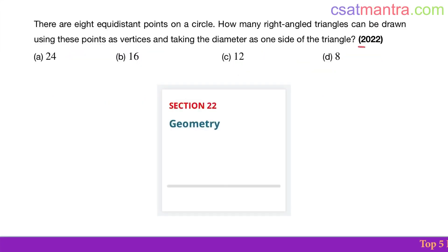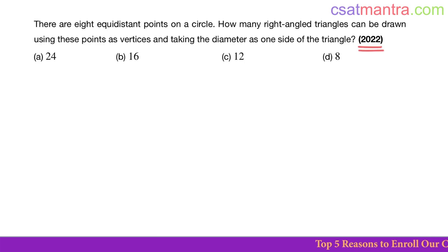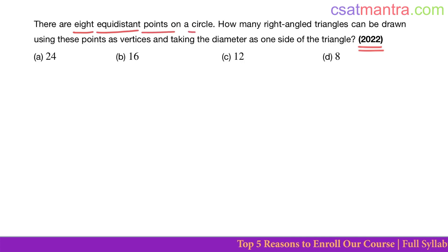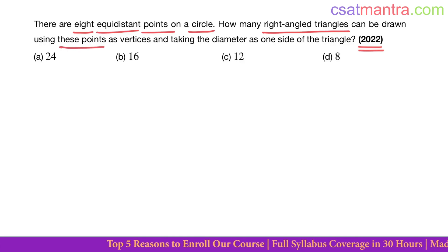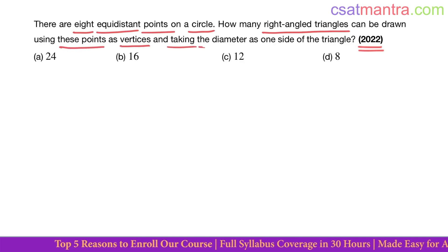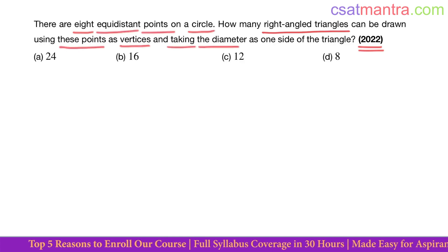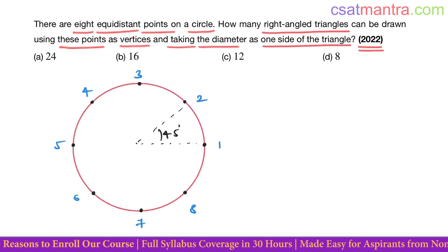This question is asked in 2022, based on geometry. There are eight equidistant points on a circle. How many right angle triangles can be drawn using these points as vertices, and taking the diameter as one side of the triangle?